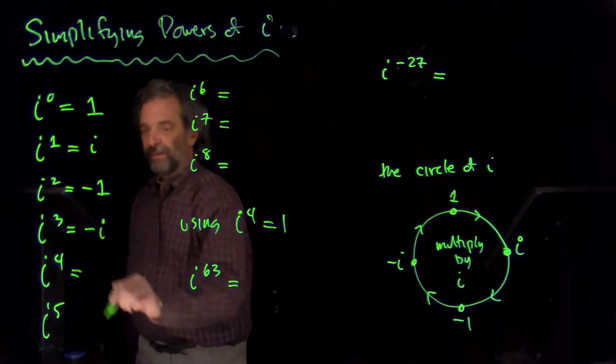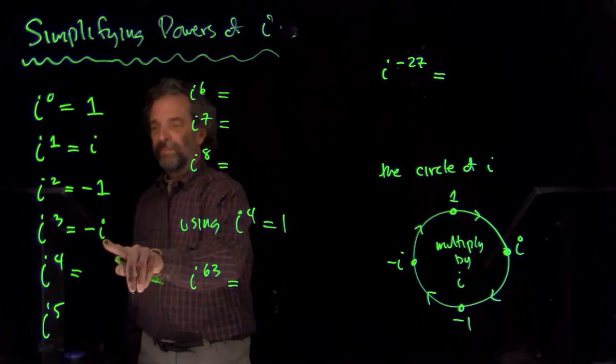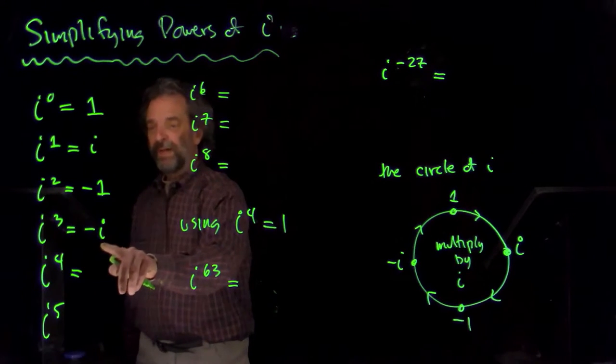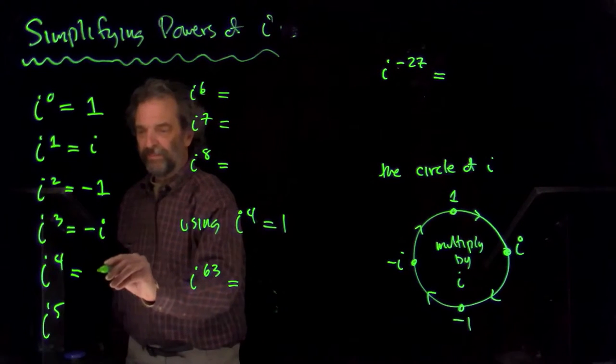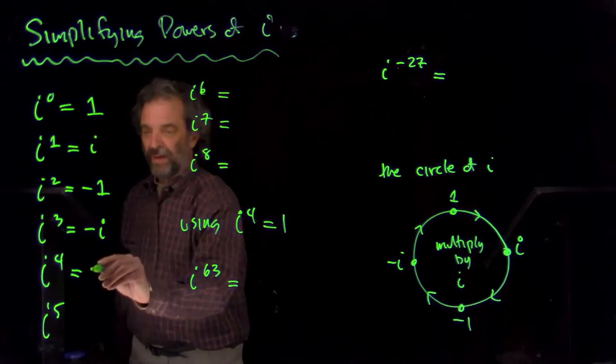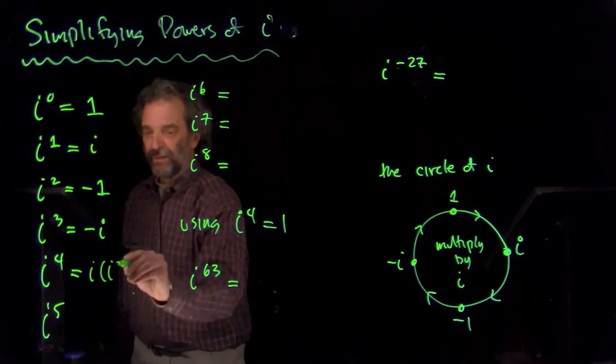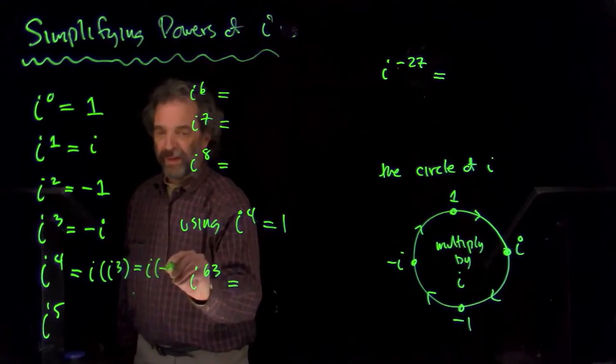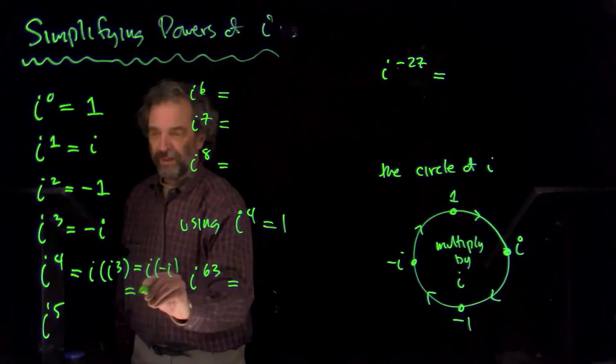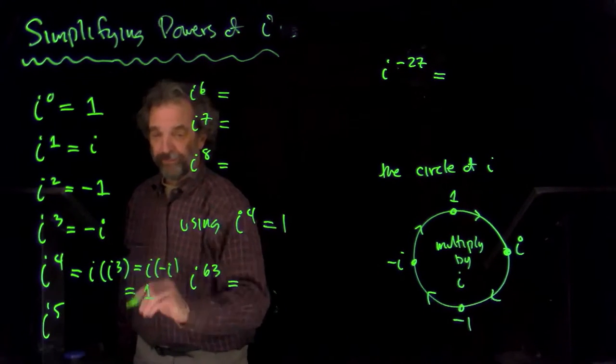And i to the fourth is i times i cubed, which is i times minus i. Let's write that like this. Well, i times i cubed like that, which is i times minus i, which is going to be one.